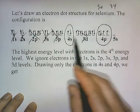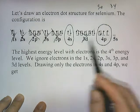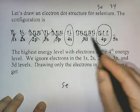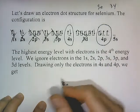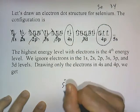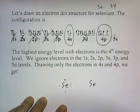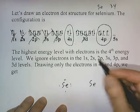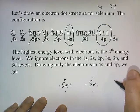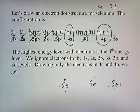Drawing only the electrons in the 4s and 4p levels: the symbol is Se, and counting those outermost electrons — one, two, three, four, five, six. So I place six electrons around the symbol: one, two, three, four, five, six. I could also add them one at a time clockwise: one, two, three, four, five, six — you get the same thing. It doesn't matter what side you start on.